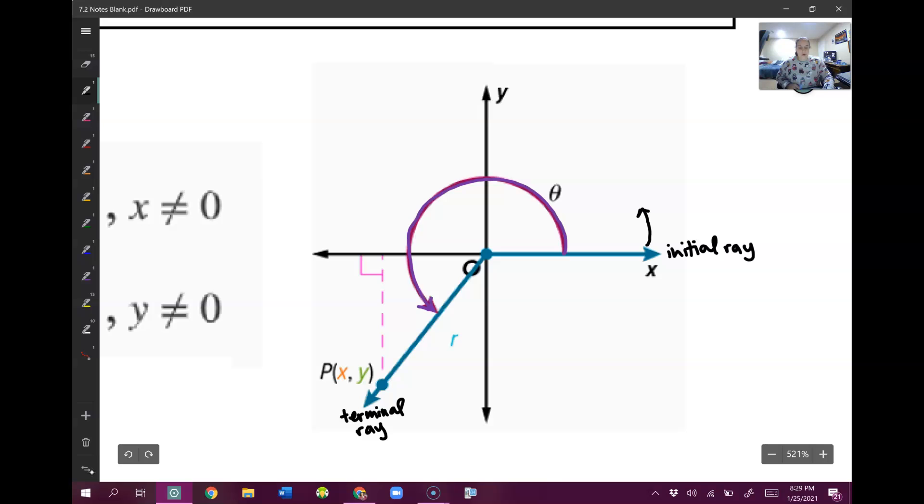We also talked about if you go counterclockwise, your angle is positive, and if you go clockwise, your angle is negative. That's all a review from 7.1.